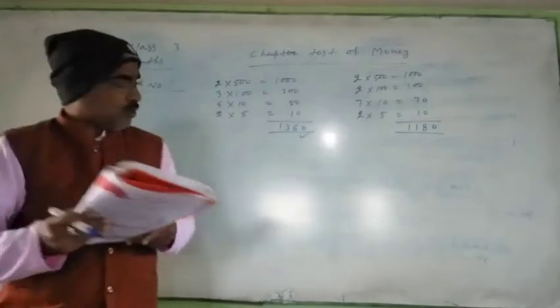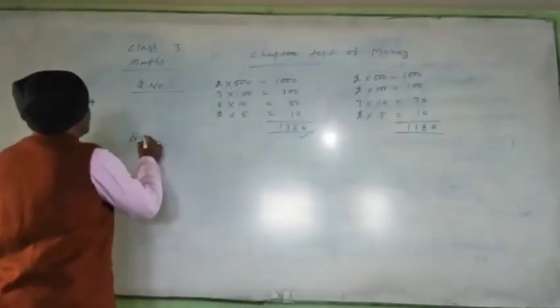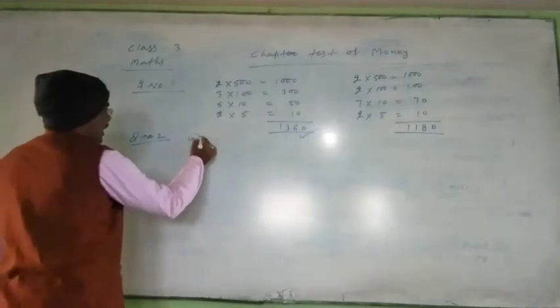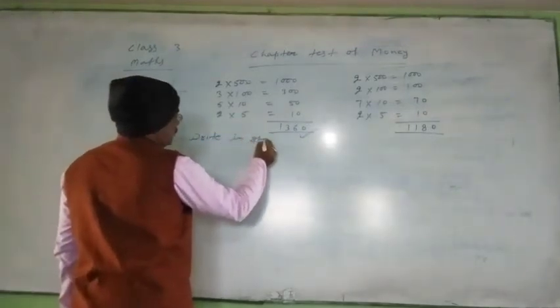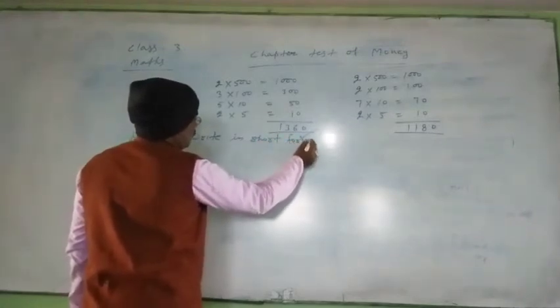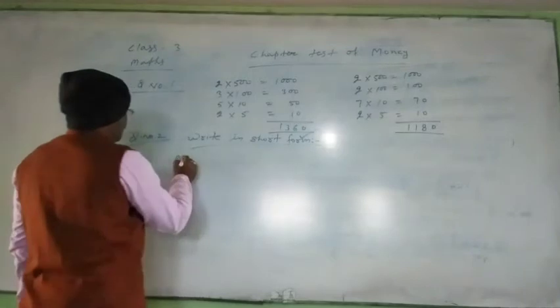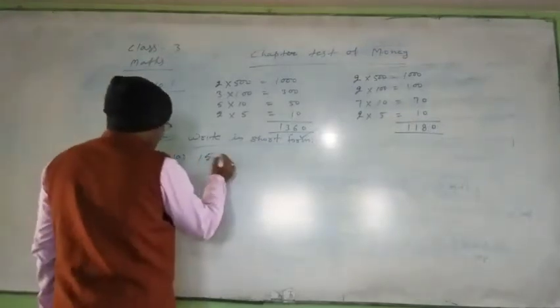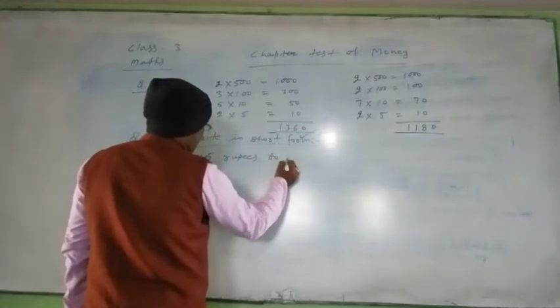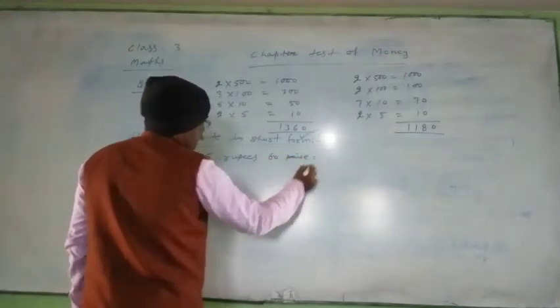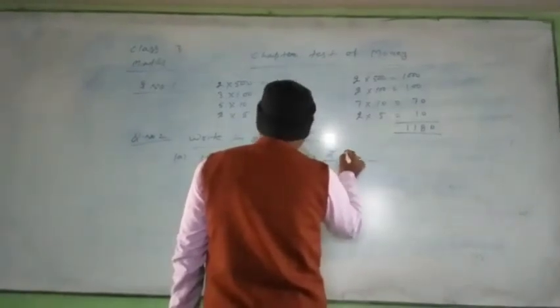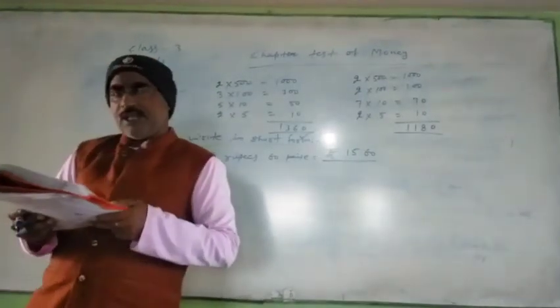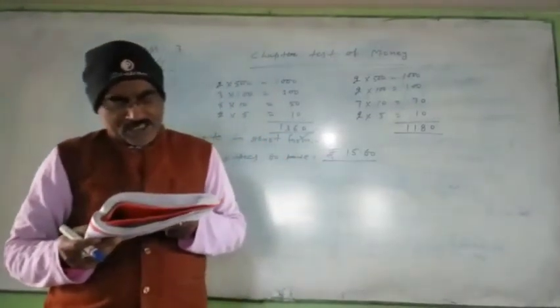Question number 2. Fill in the blanks - write in short form. Part A: Fifteen rupees sixty paise. You write rupees 15.60. This is your correct answer. In this way, my dear students, you solve question number B, C and D.